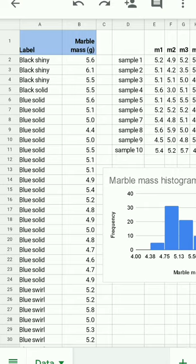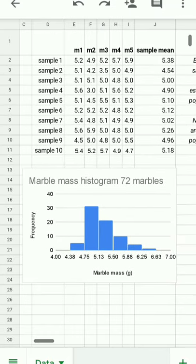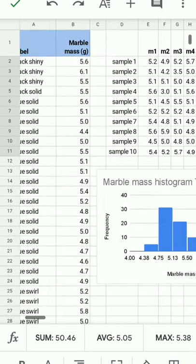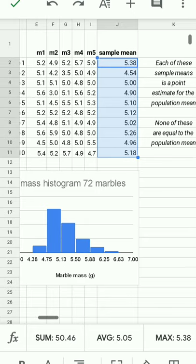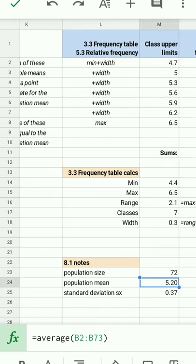For this particular class example, the 72 marble masses that constitute the population of marbles is actually known. The 10 samples that I took provided 10 sample means. Now, because all 72 and the whole population are known, I do have the ability to calculate the actual population mean. And the actual population mean is down here. 5.2 grams.